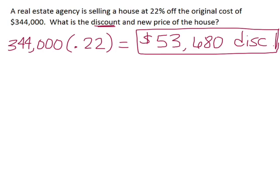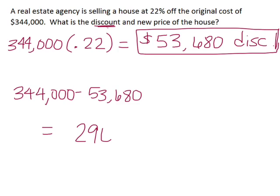And now we want the new price. Since it's a discount, it's a subtraction. So we do $344,000 minus $53,680, and we get $290,320 for our new price.